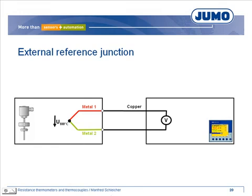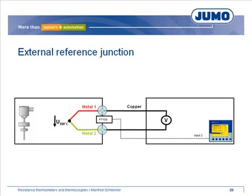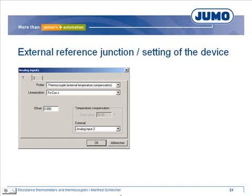Generally, thermocouples and field devices can be connected using a copper wire. In that case, the reference junction is on the terminals of the thermocouple. The device measures the voltage of the thermocouple minus the voltages of the terminals and calculates the temperature differential. To identify the process temperature, the temperature differential and the temperature of the terminals must be added up. The field device measures the temperature of the terminals using a further temperature sensor, for example a PT100 connected to input 2. Select external temperature compensation for the thermocouple input and choose the input for the reference junction temperature.